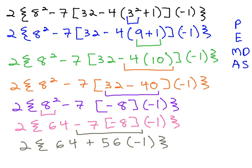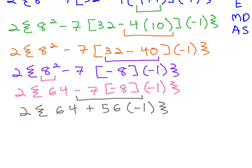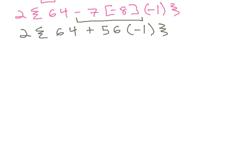And I'm running out of space on here, so I'm going to scroll up a bit so we have some space to continue to work. Still multiplying from left to right inside those squiggly parentheses. So we have 2 times 64, 56 times negative 1 is negative 56.